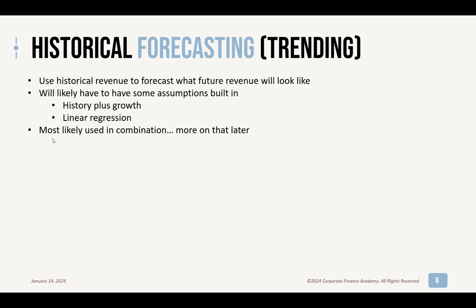Think about it: if you sold 2 million three years ago, then 4, then 6, then 8, you might say we're going to have 10 million next year. That's a super simple example of what that trending might look like.